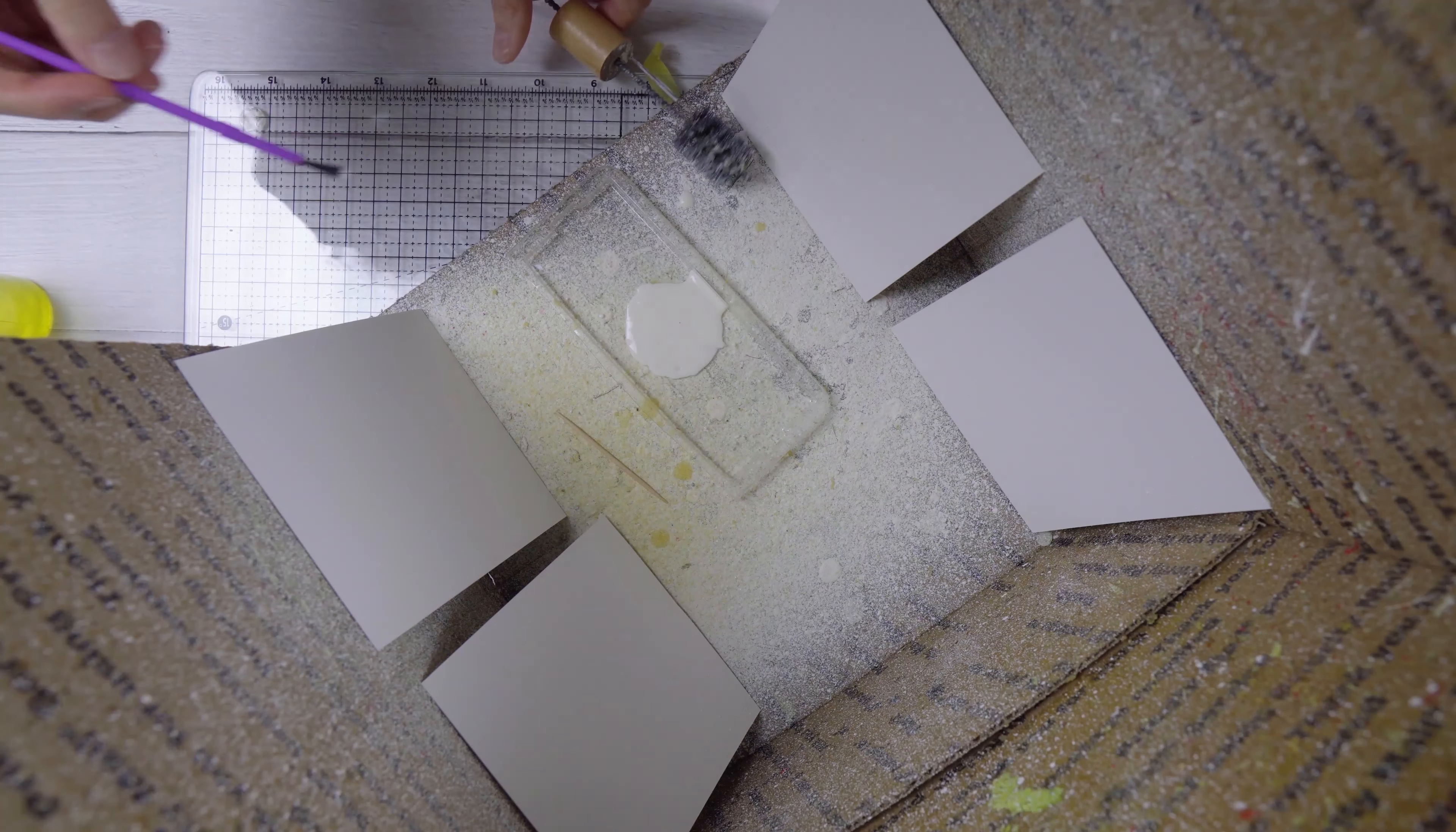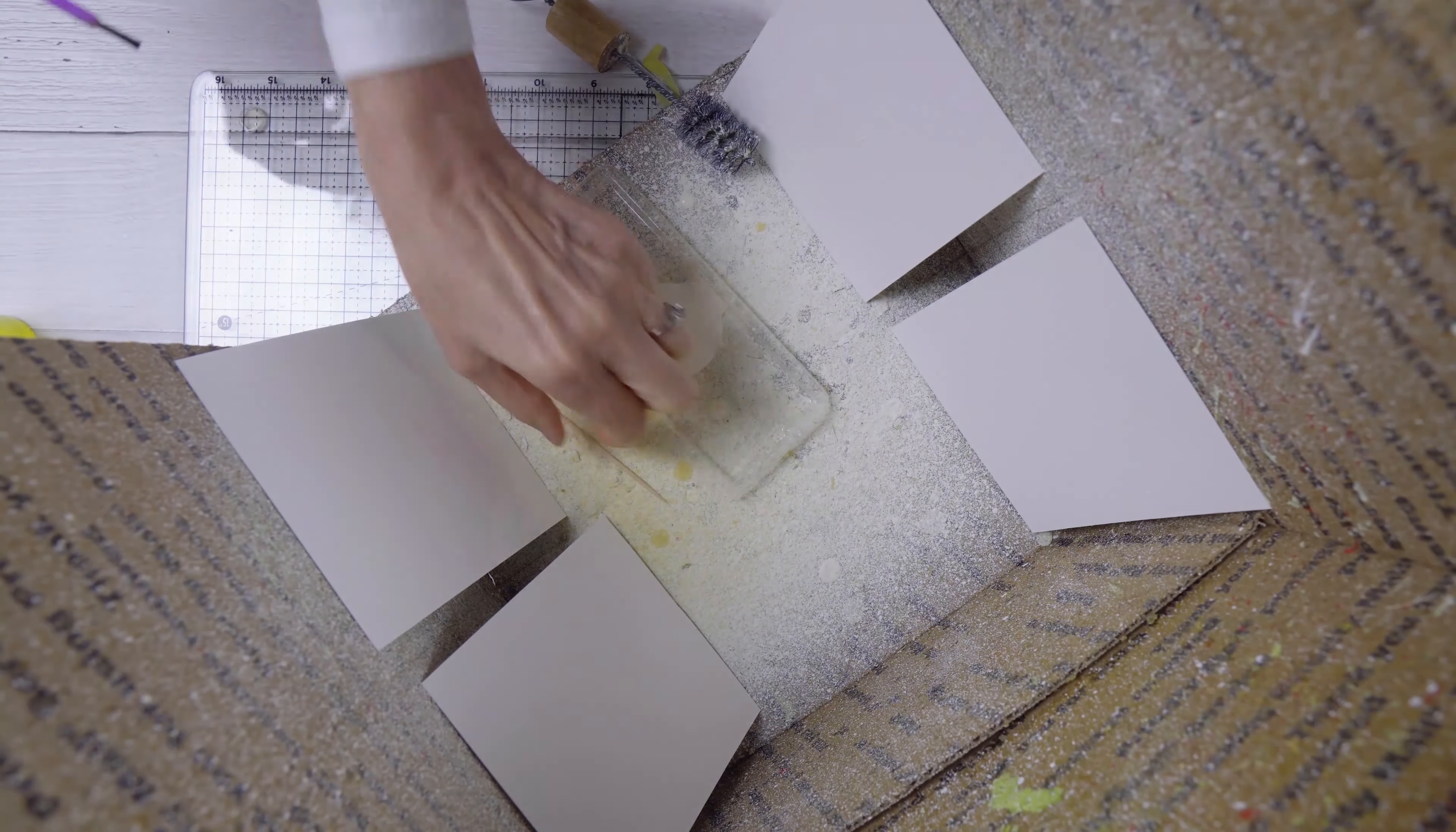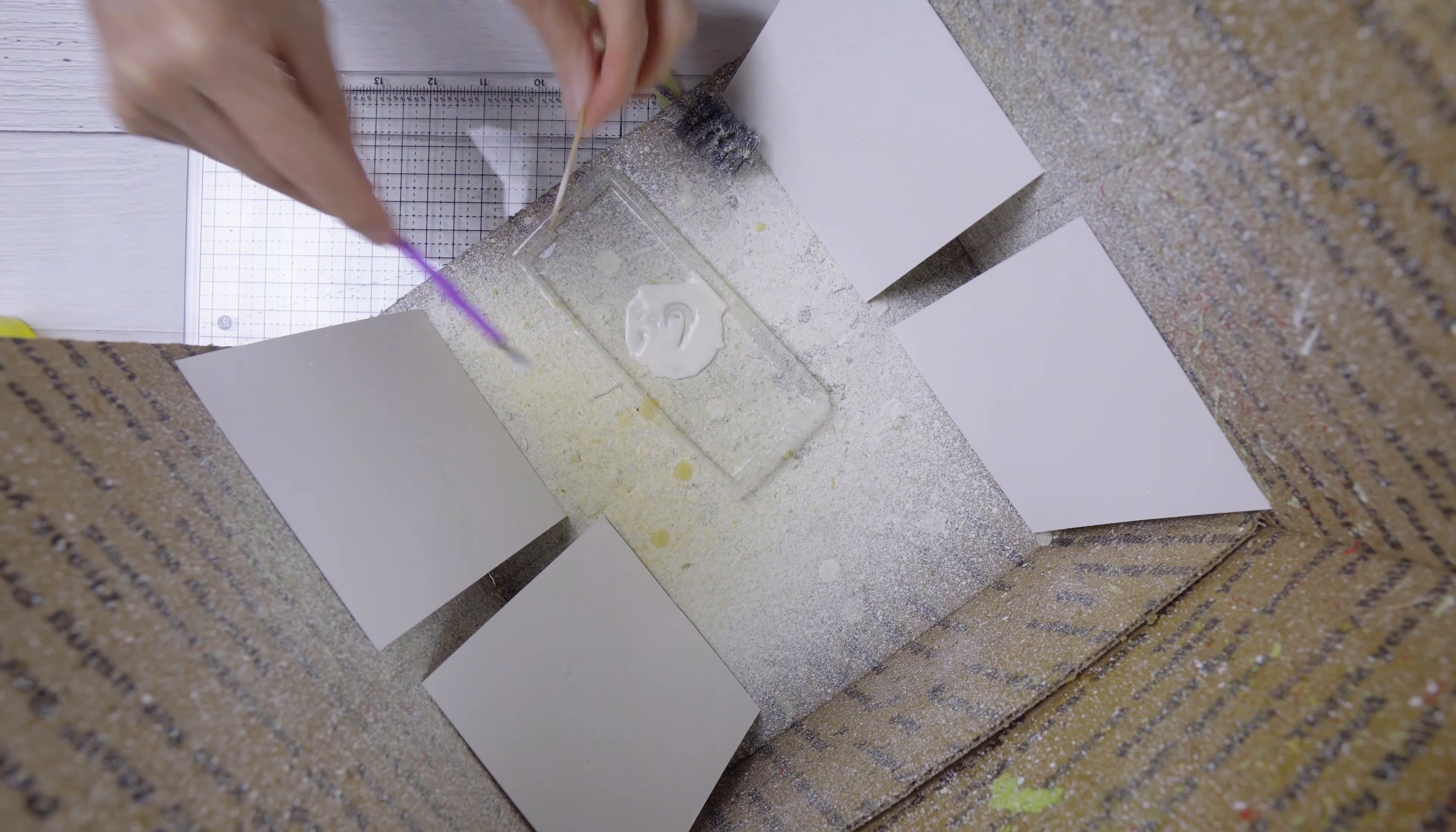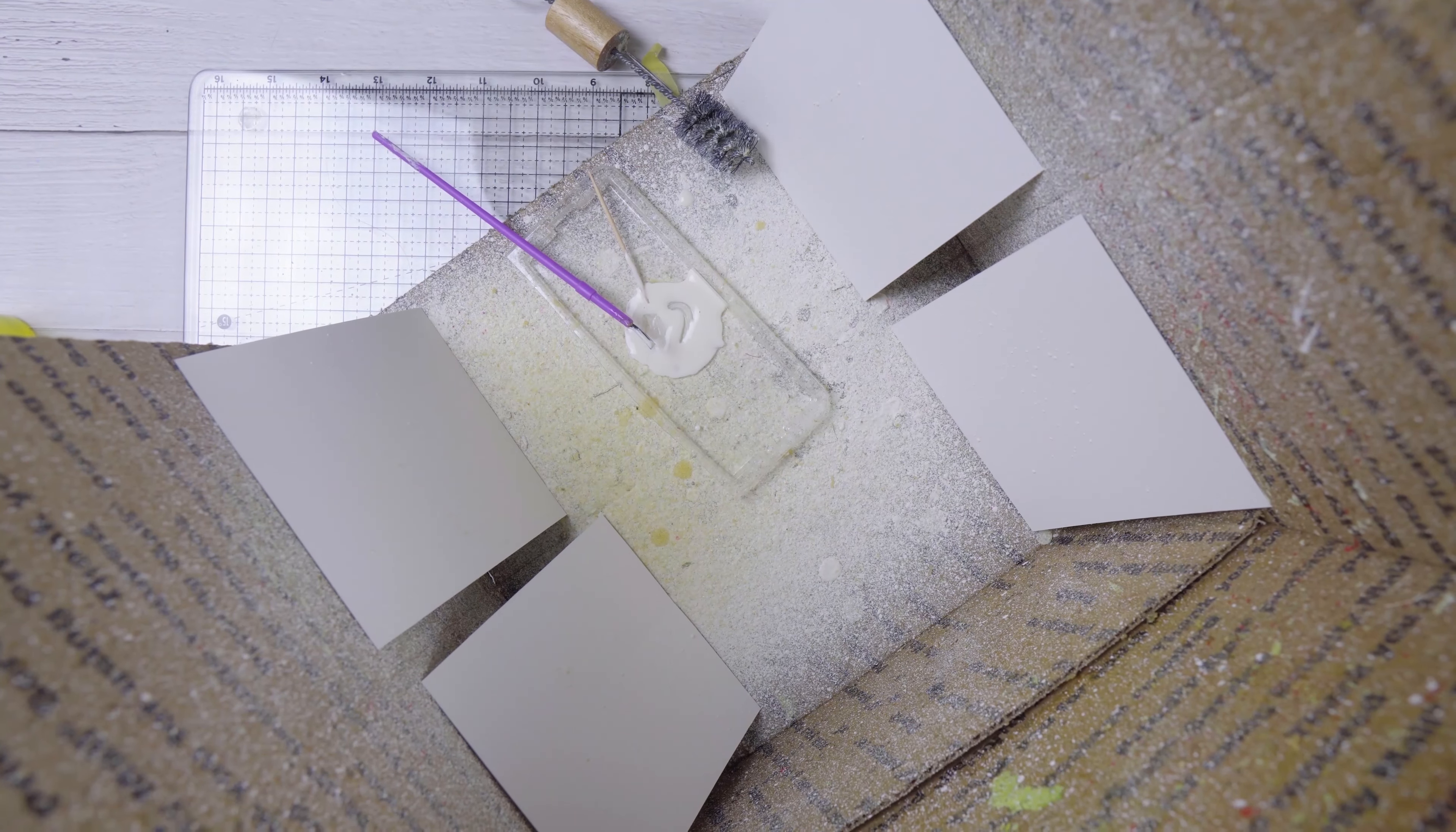Sometimes I want bigger splatters, so I just use a cheap brush, still put a little bit of dish detergent in, and then I pick up some masking fluid and flick it off the brush with a toothpick. Often I will give my panels a splatter with the small bristles and then with the other brush as well.